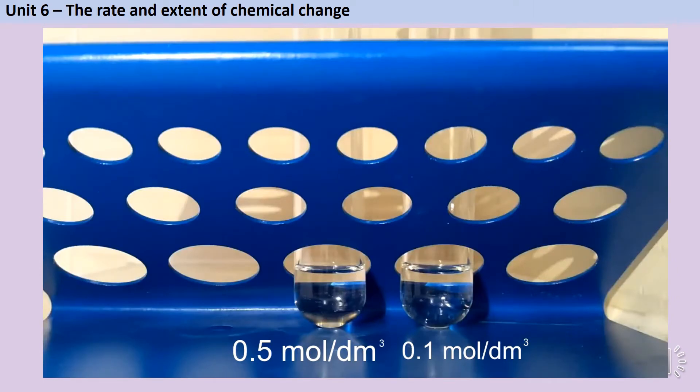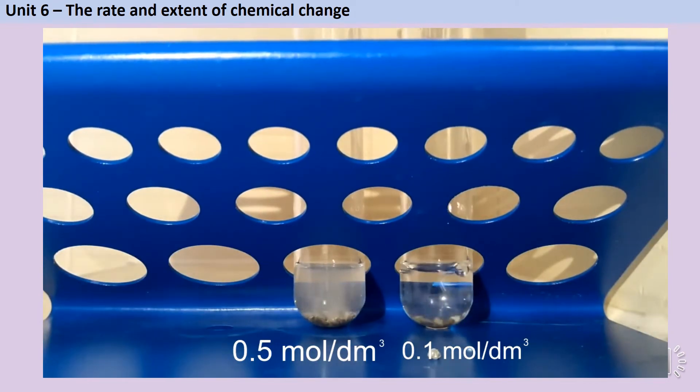We can see the impact of concentration on rate of reaction quite clearly by doing two reactions which are identical apart from the concentration of acid involved. Here on the left I have some 0.5 molar hydrochloric acid and on the right some 0.1 molar hydrochloric acid. And to both tubes I'm adding the same mass of calcium carbonate or marble chips. As you can see the more concentrated acid reacts much much faster.